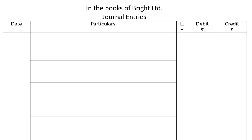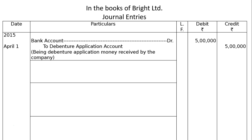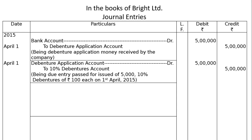In the books of Bright Ltd, journal entries are drawn. First entry dated April 1, 2015: Bank account debited to Debenture Application account — Rs 5 lakh debit, Rs 5 lakh credit. Being debenture application money received by the company. Next entry: Debenture Application account debited to 10% Debentures account — Rs 5 lakh debit, Rs 5 lakh credit. Being issue of 5,000 10% debentures of Rs 100 each on 1st April 2015.